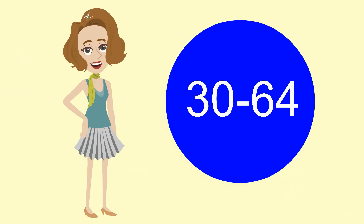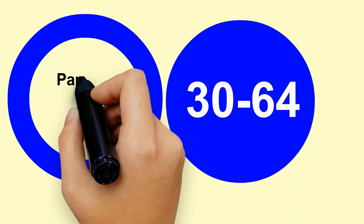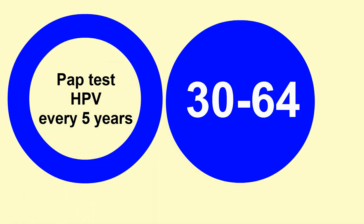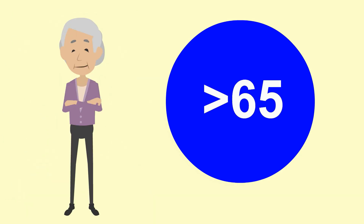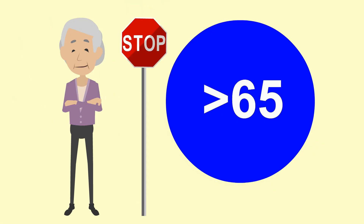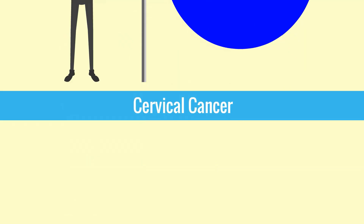For older women ages 30 to 64, PAP test and HPV testing every five years is preferred, or PAP test alone every three years. For women who are 65 or older, PAP test screening can stop if she has adequate negative screening and no history of cervical dysplasia greater than CIN 2 within the last 20 years.